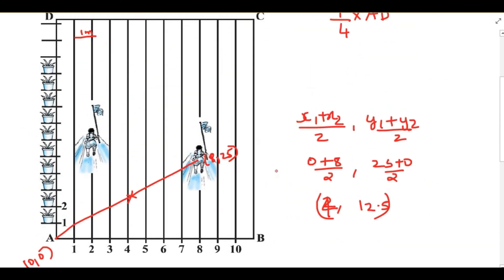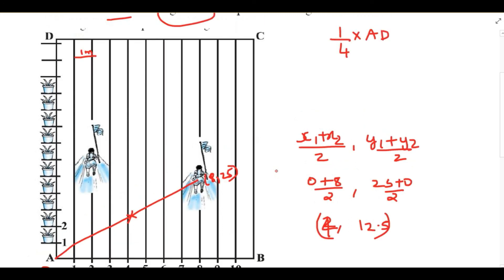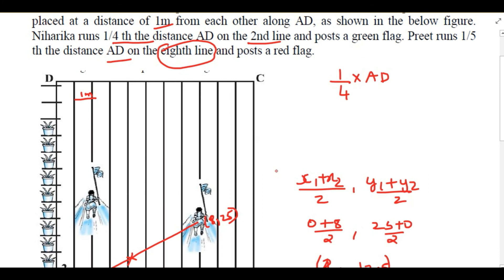This question has been asked from the chapter Coordinate Geometry as a case study based question. We mainly used the distance formula — √[(x₂−x₁)² + (y₂−y₁)²] — and the midpoint formula — ((x₁+x₂)/2, (y₁+y₂)/2). Thank you for watching.